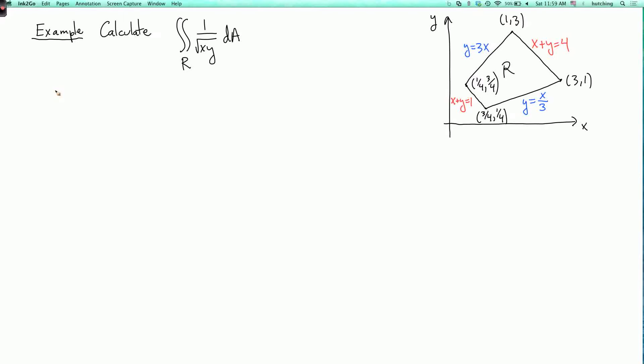So if we wanted to do it this way, we could integrate over y first. So to get a clean formula, we'd have to divide the integral into three parts. So first there's where x goes from 1 quarter to 3 quarters. So that's sort of this leftmost triangle of the region.